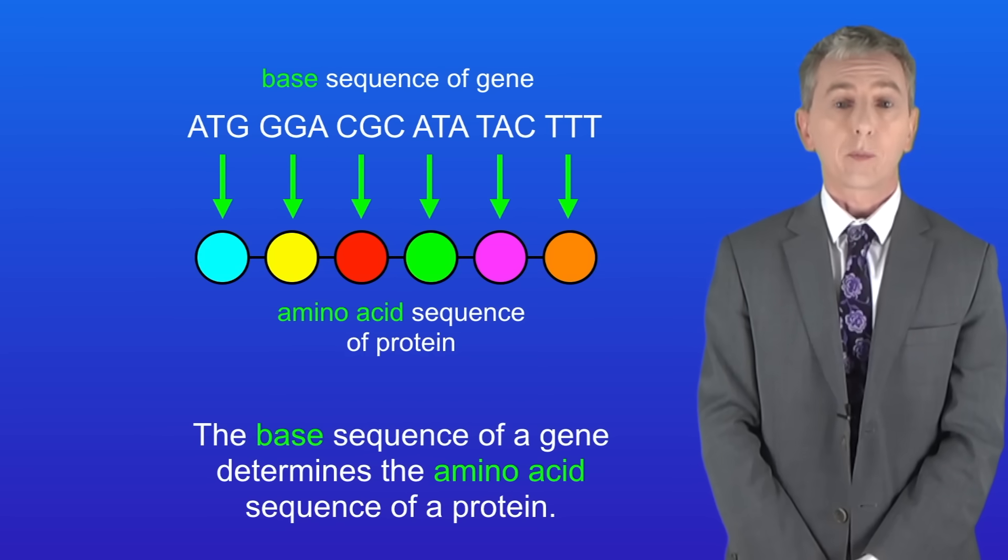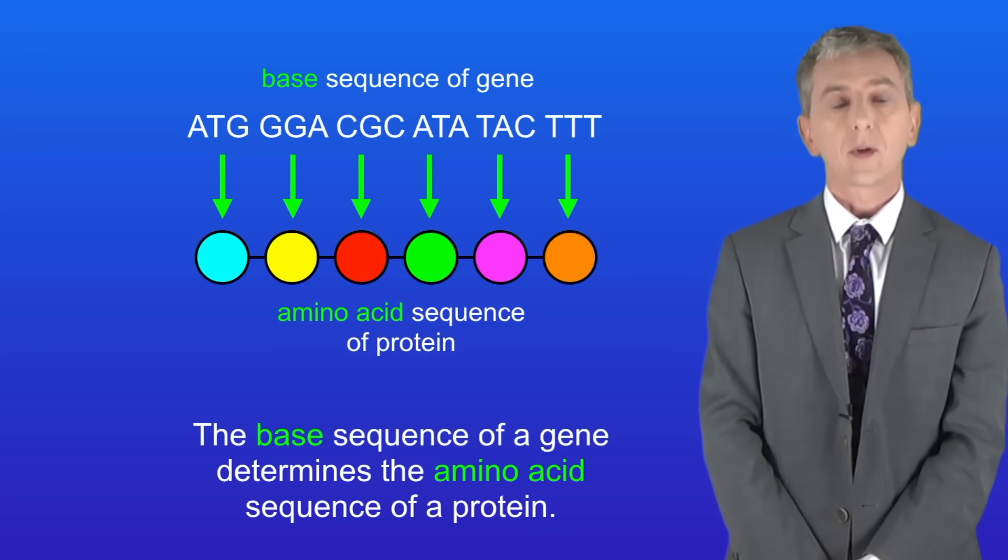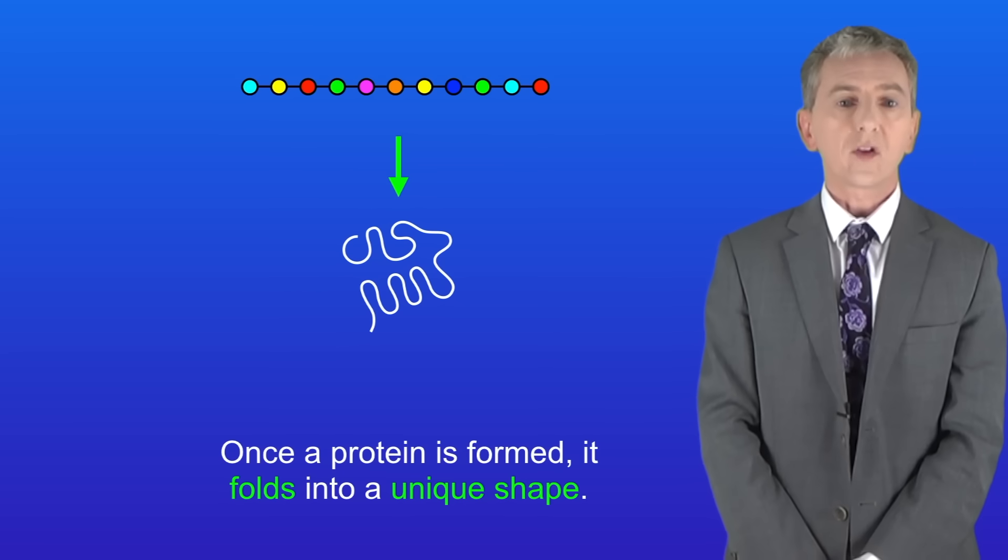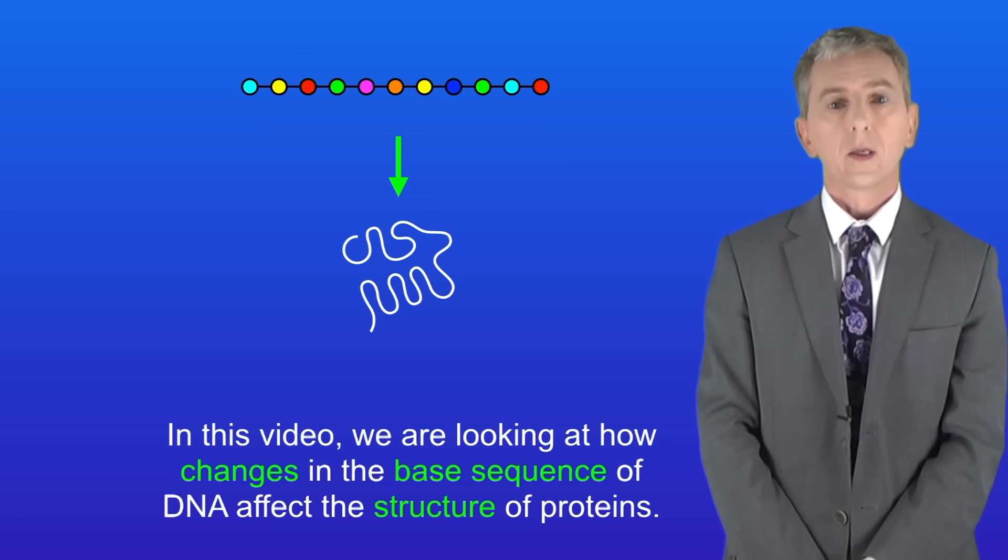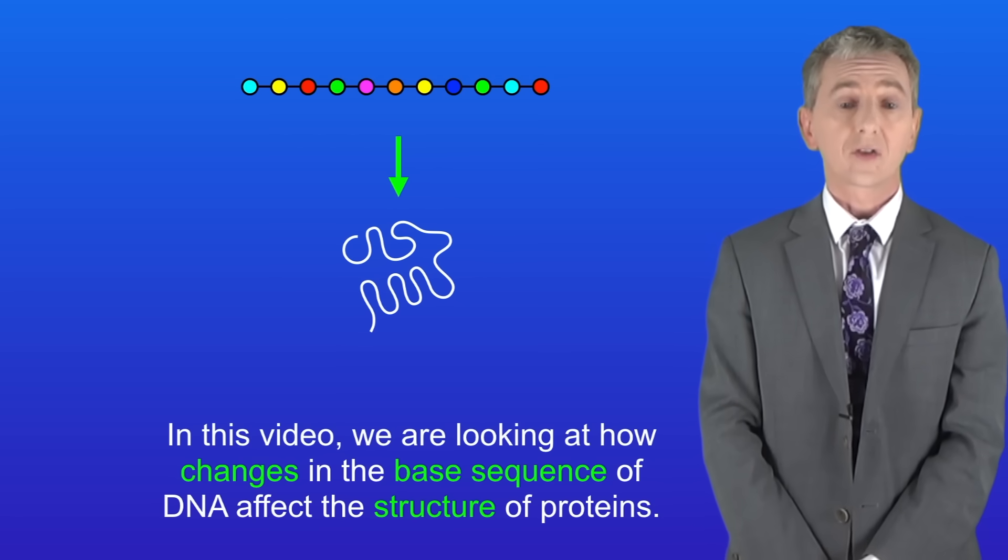In the last video we saw that the base sequence of a gene determines the amino acid sequence of a protein. Once a protein is formed it folds into a unique shape, and the shape of a protein determines its function. So in this video we're looking at how changes in the base sequence of DNA affect the structure of proteins.